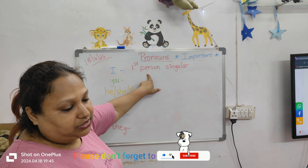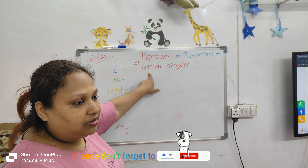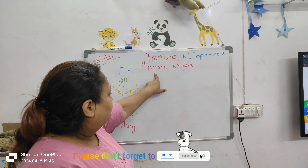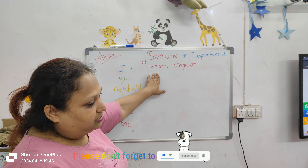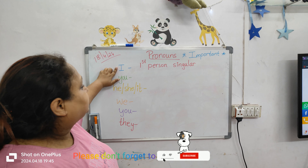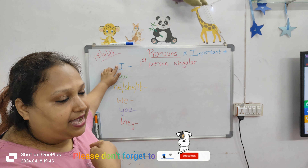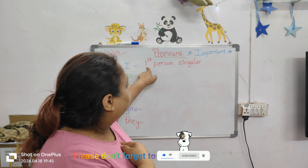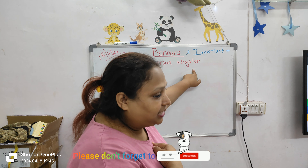Now we are talking about personal pronouns. Stop writing and listen first. The first personal pronoun is 'I'. When you are talking about yourself, how many people are there? One. So it is first person singular.